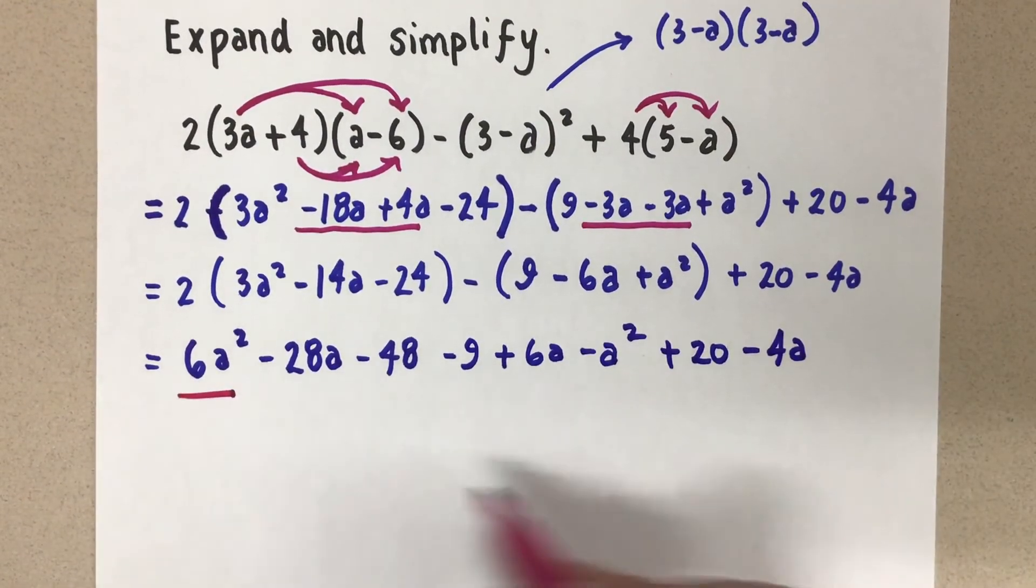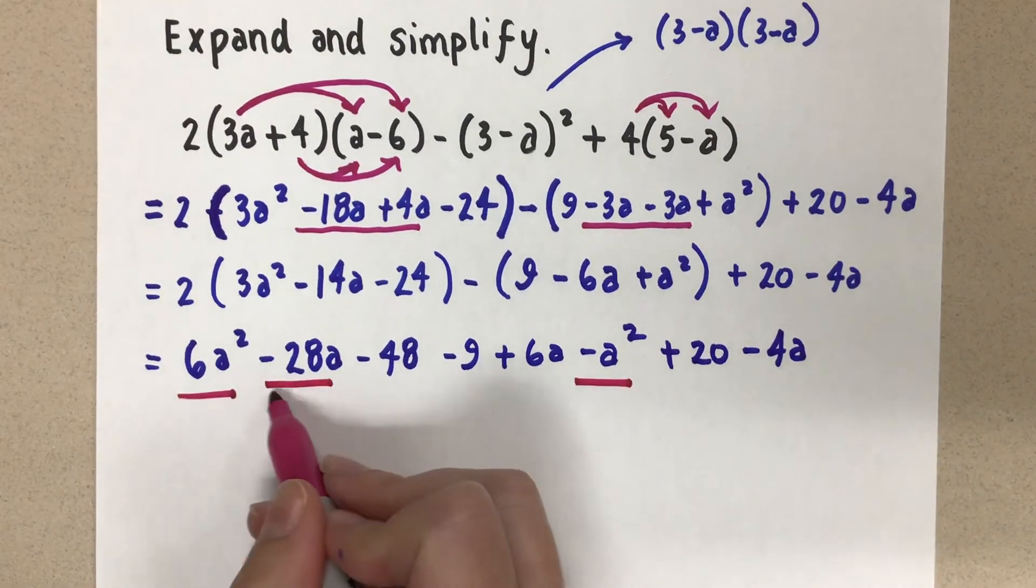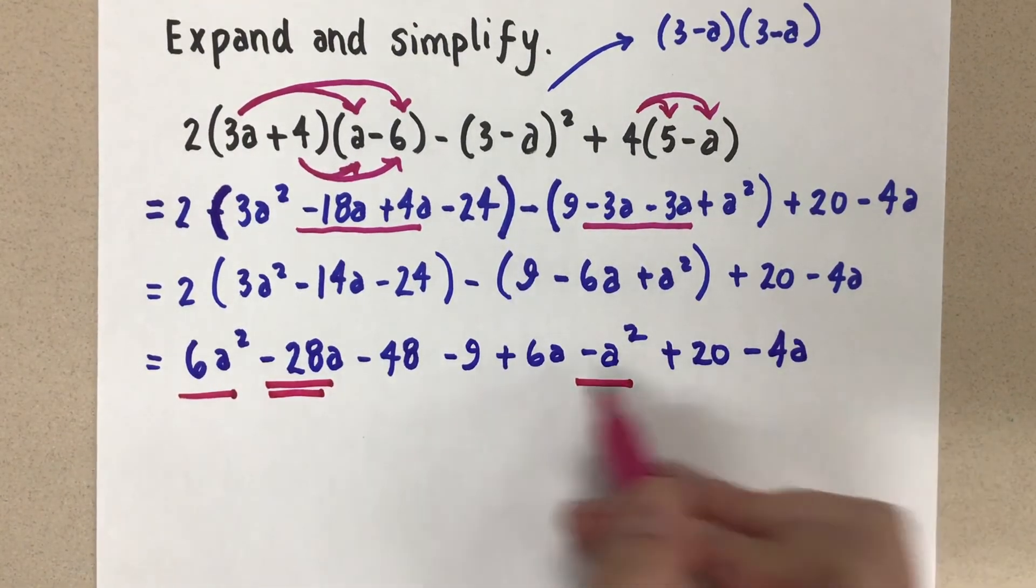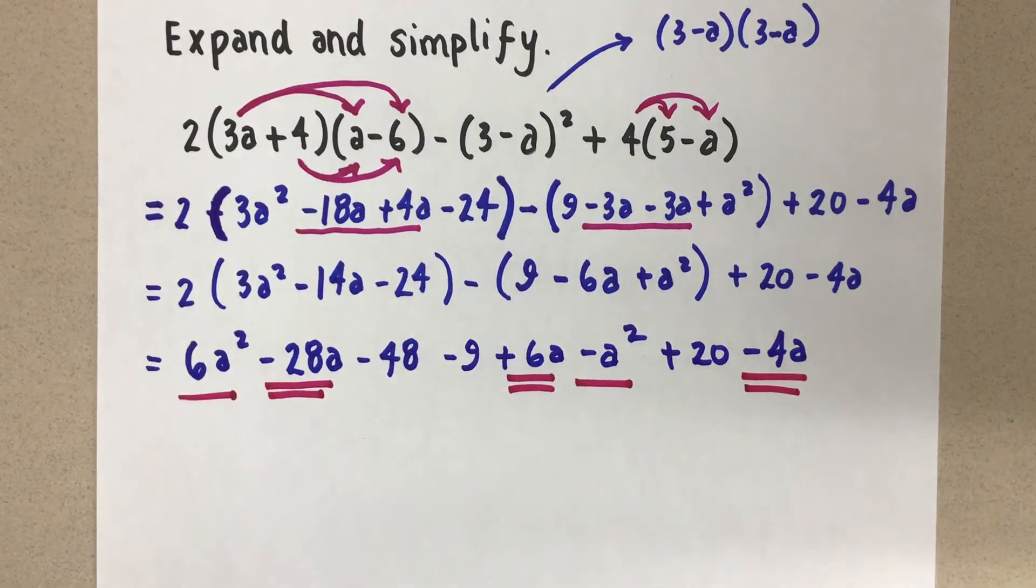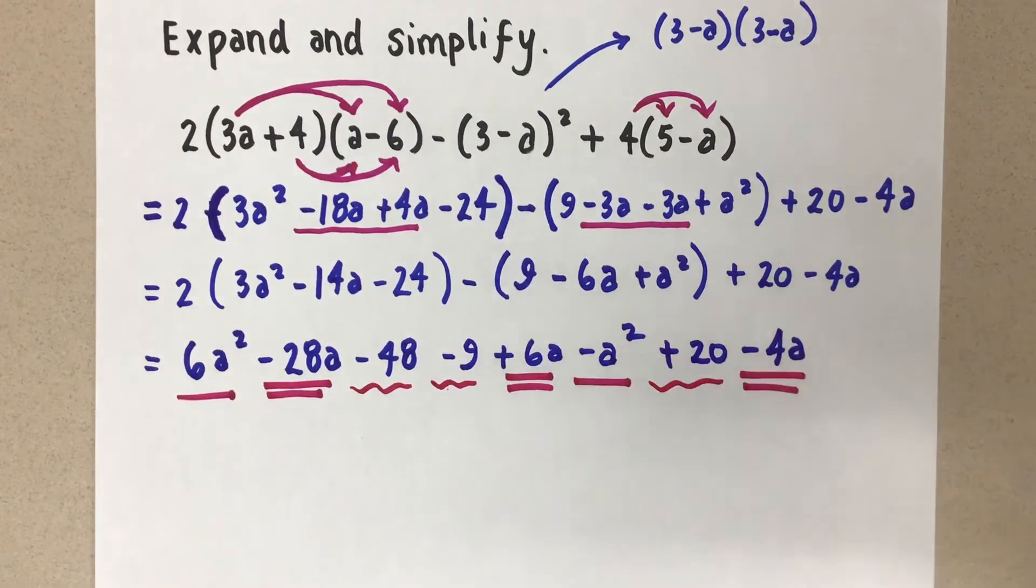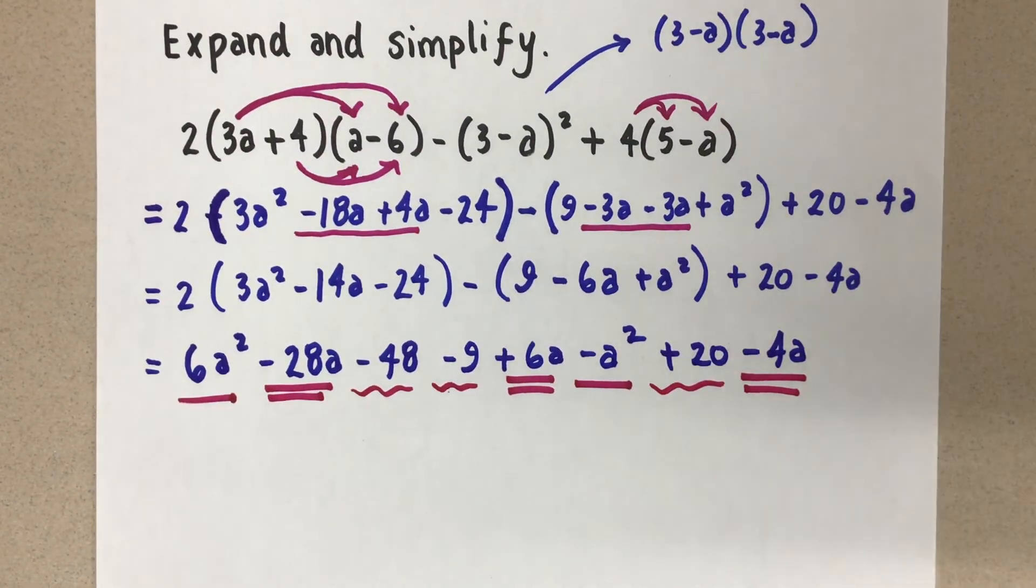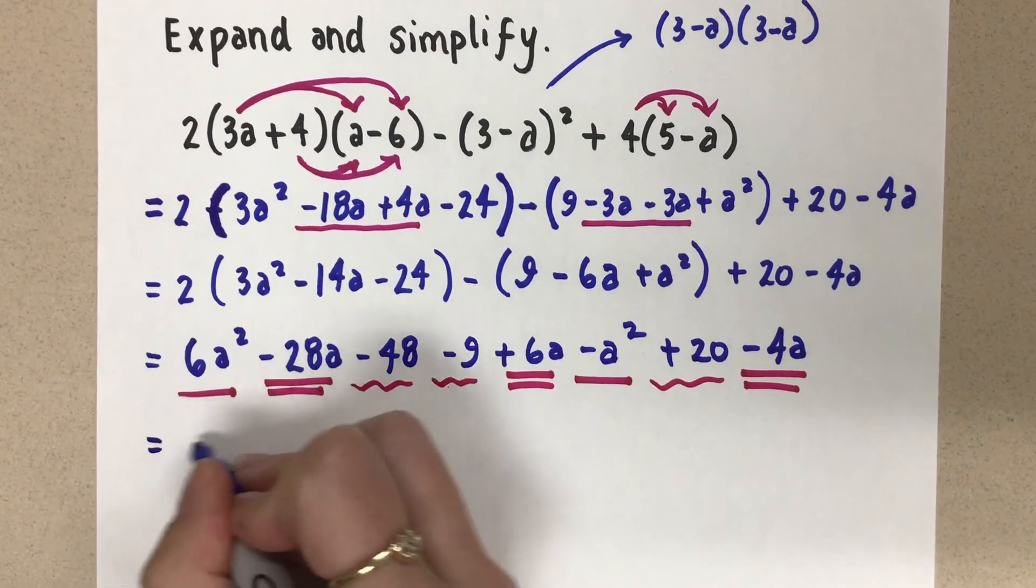Alright. So we're going to collect like terms now. I have an a squared term here and an a squared term here. And I have an a term here and an a term here and an a term here. And then I've got constant, a constant, and a constant. So let's collect like terms, everybody. The 6a squared minus a squared is 5a squared.